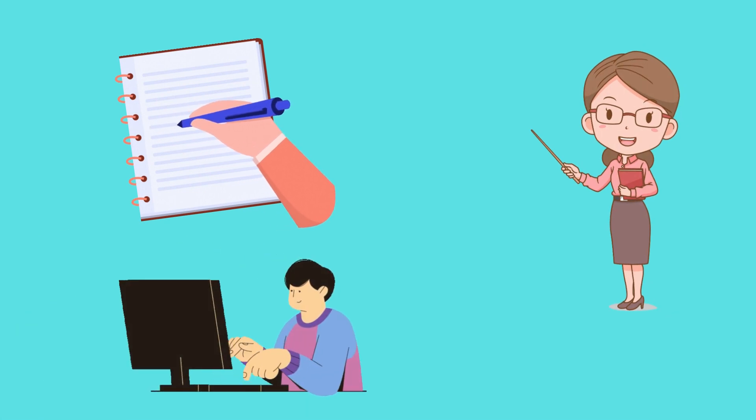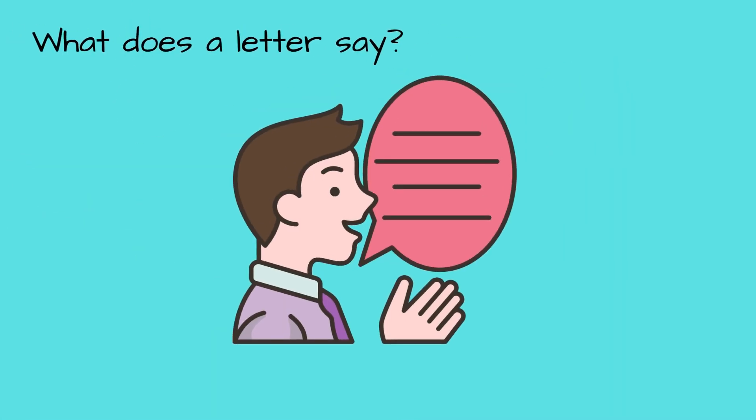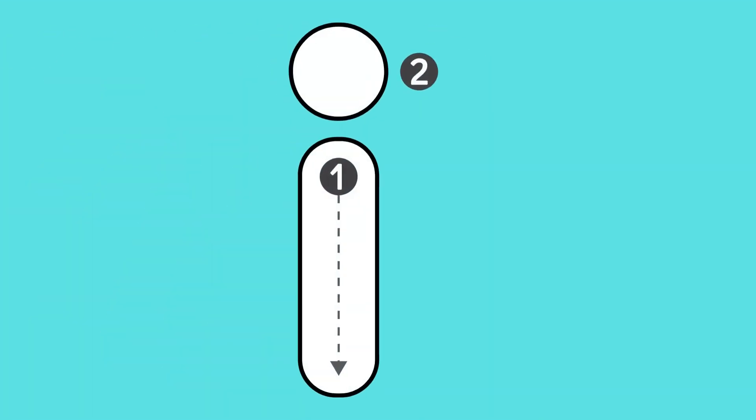I am going to say a sound, and you are going to write a letter that represents that sound. For example, I might say, what vowel says i? And you would write the vowel i.